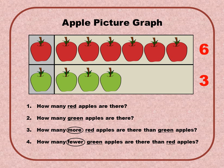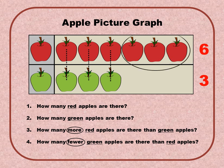Question number three is where it gets a little bit tricky. Question number three says: how many more red apples are there than green apples? To help with this, we can match them up — red to green, red to green, red to green — and then circle the extra ones.